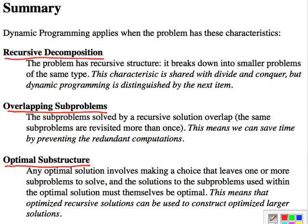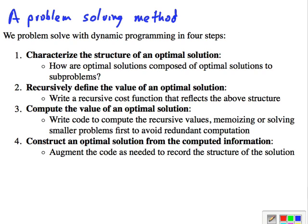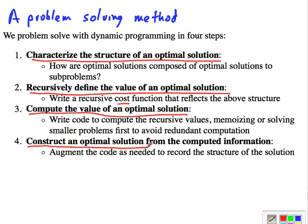Optimal substructure means you can use optimized recursive solutions to construct the optimized larger solution, letting you reuse previous computations. Dynamic programming is a problem-solving method applied in four steps: first, figure out the structure of an optimal solution by proving optimal substructure; second, write a recursive equation defining the value of the optimal solution; third, write code to compute that value; fourth, augment the code to record the optimal choices made, then add an output procedure to reconstruct the solution.